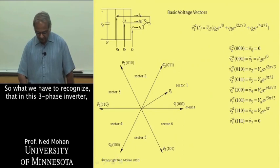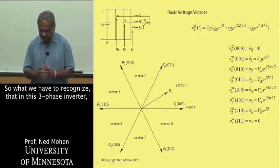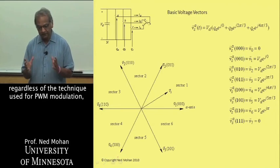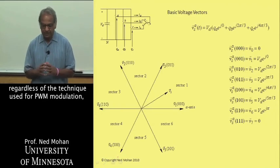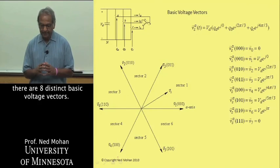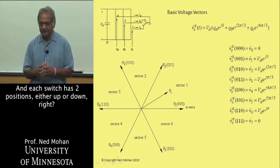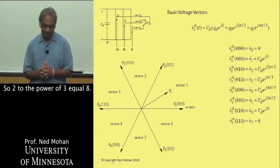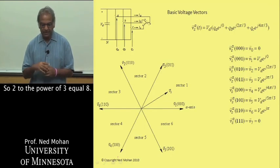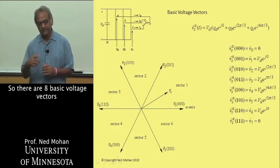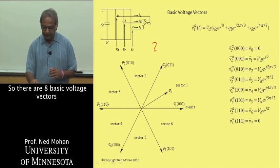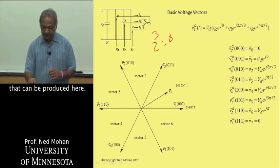What we have to recognize is that in this three-phase inverter, regardless of the technique used for pulse width modulation, there are eight distinct basic voltage vectors. Because each switch has two positions, either it's up or down, so two to the power of three is equal to eight.